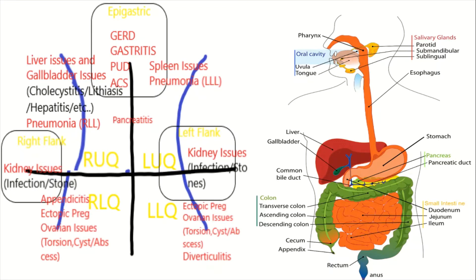In the lower quadrants, you can have pain from an ectopic pregnancy, ovarian issues like torsion, or even testicular issues presenting as lower abdominal or suprapubic pain. Specifically, the right lower quadrant is associated with appendicitis, while the left lower quadrant includes diverticulitis. The flanks can signal kidney issues like infections and stones. Keep in mind that pain location will not always correlate with the organs in that area due to innervation — pain is often referred. Also, some conditions like DKA cause diffuse abdominal pain.